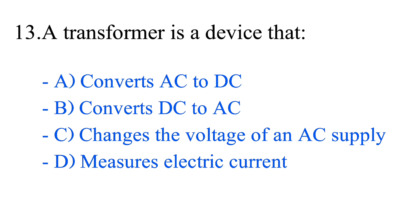Question number 13. A transformer is a device that: option A, converts AC to DC; option B, converts DC to AC; option C, changes the voltage of an AC supply; option D, measures electric current. The correct answer is option C, changes the voltage of an AC supply.